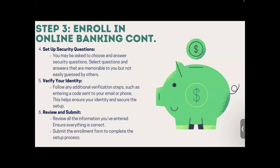Continuing enrollment: set up security questions by choosing questions and answers that are memorable to you but not easily guessed by others — examples include questions about your childhood home or first pet. Then verify your identity by following additional verification steps, such as entering a code sent to your email or phone, to help secure the setup.